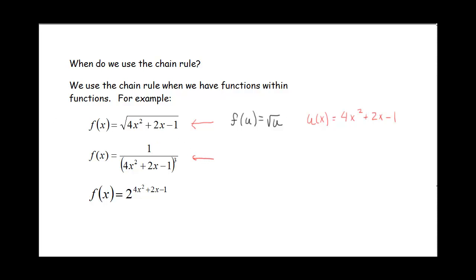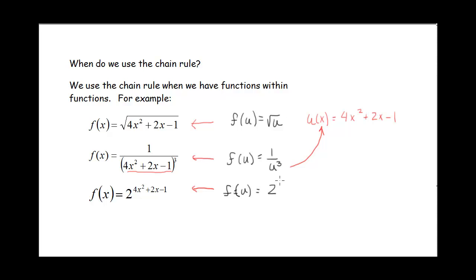Notice that we have the same inner function, but this time our outer function is 1 over u cubed. So the inner function — 4x squared plus 2x minus 1 — is the same, but the outer function has changed. In the last example, the inner function is again the same, but the outer function is an exponential: 2 to the u.